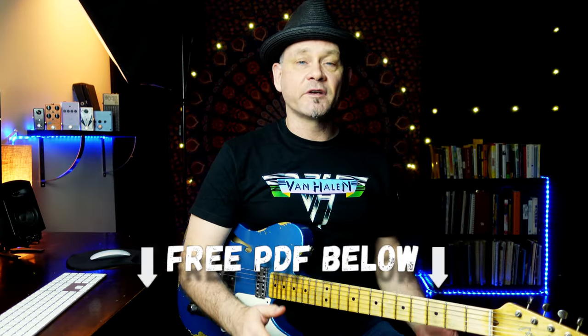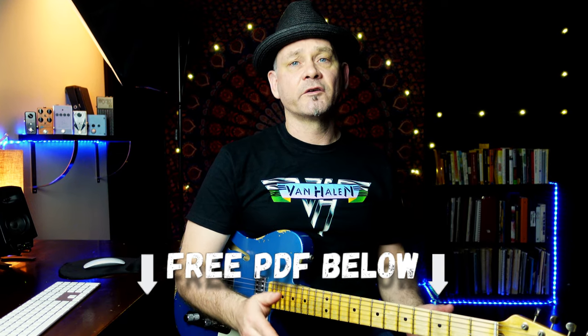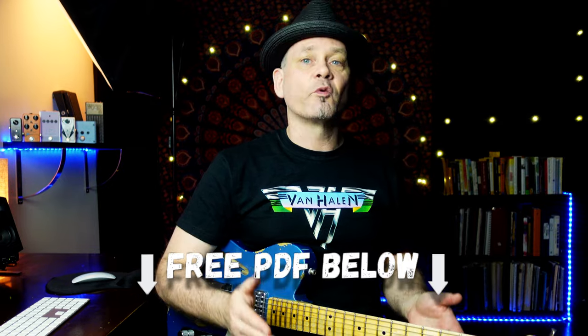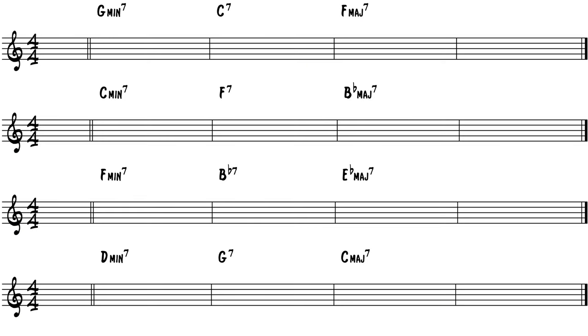In the PDF below that you can download, not only will I include all the examples here, but I will have a section where you can print out and write your own lines over some 2-5-1 chord changes. Now how cool is that?